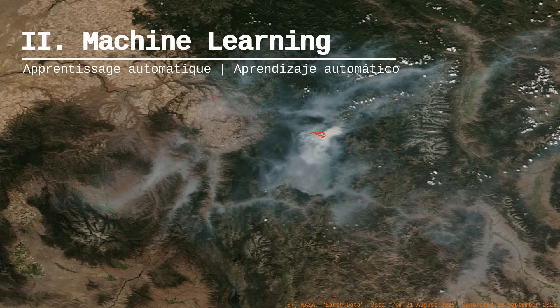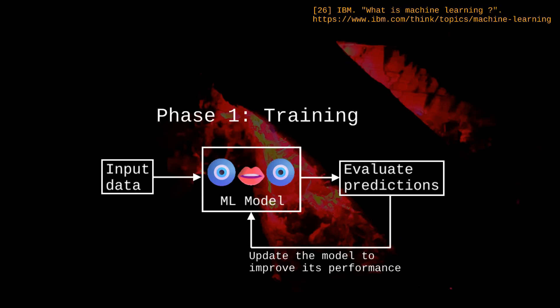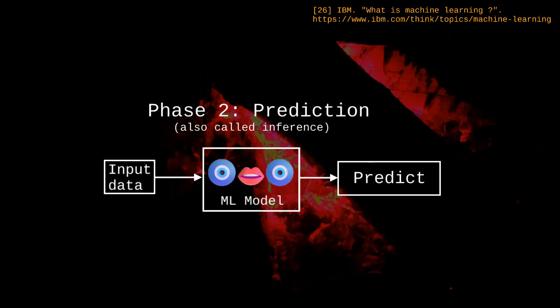Apart from numerical simulations, a more recent type of fire modeling tools are machine learning models. A machine learning model learns to perform a task by analyzing a large amount of data during a process called training. For example, a model can ingest satellite images and learn to forecast wildfires. When presented with a satellite image it has never seen before, the model predicts potential fires. It's not guaranteed to get it right all the time, but if trained correctly, it can offer good results.